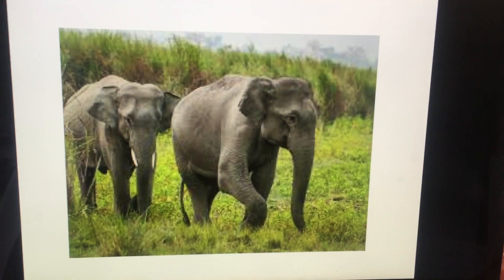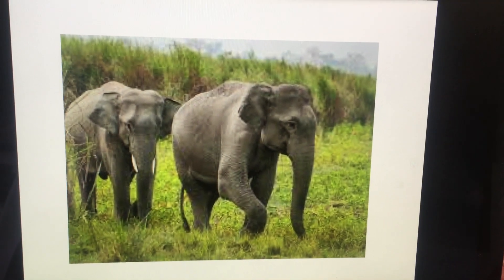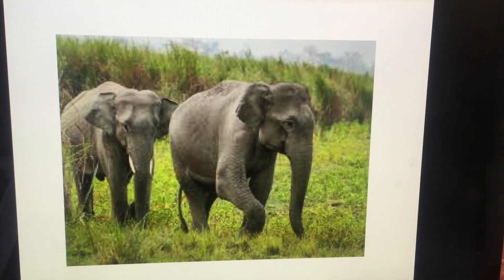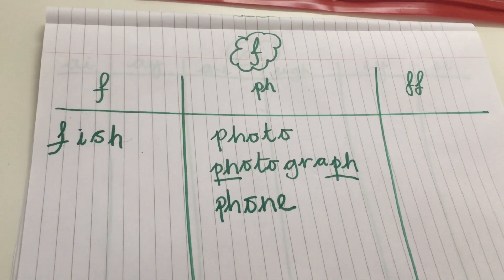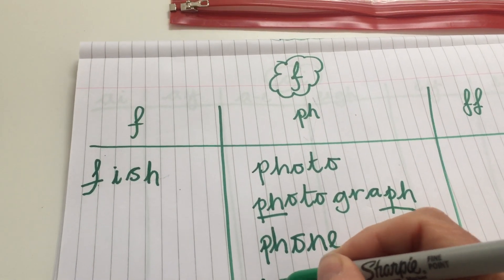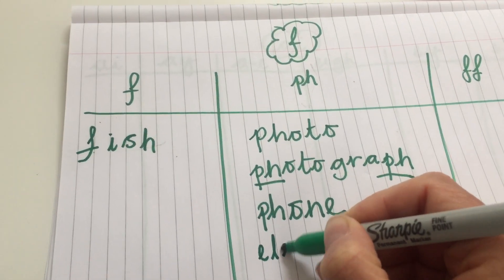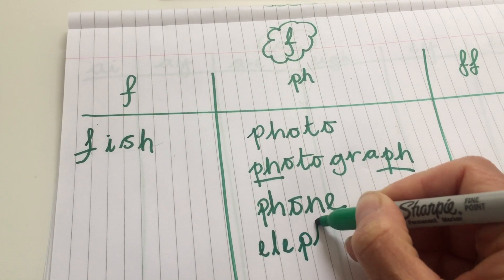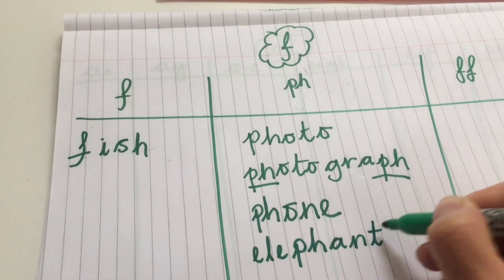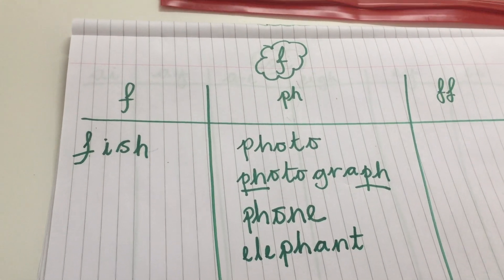The next picture is an elephant, or two elephants actually. And there's an elephant sound. The F is in the middle of that word. So we're going to add that in. That's a P and an H making that sound. So we're going to write the word elephant: E-L-E-P-H, the PH making the F, A-N-T. Elephant. Well done.